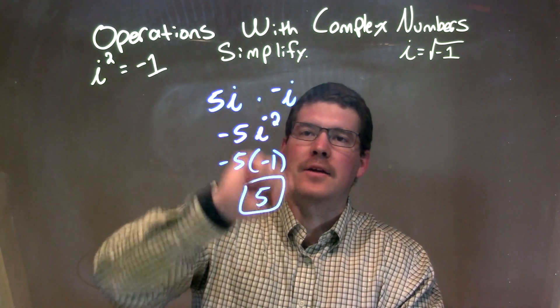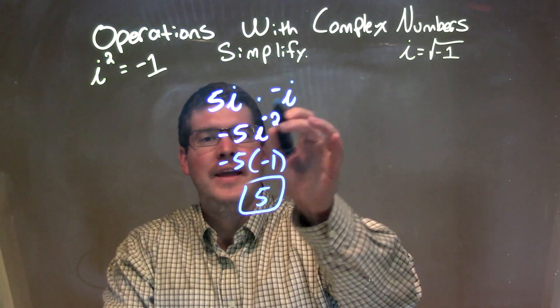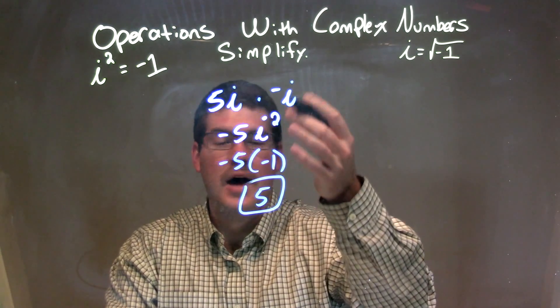So let's recap. We're doing 5i times negative i. Well, we multiply that out, the negative comes out front, the 5 stays up there too, so we have negative 5 times i times i is i squared.